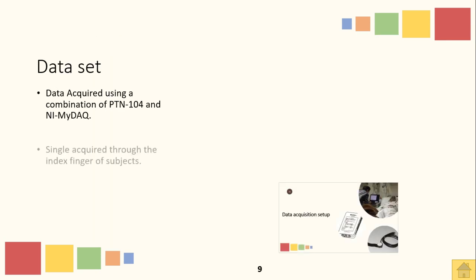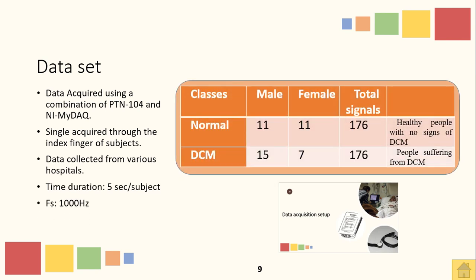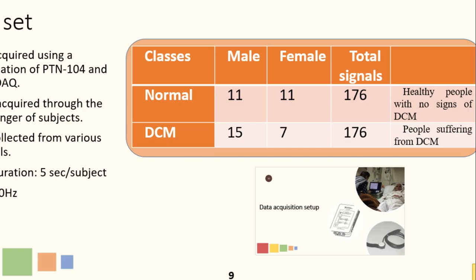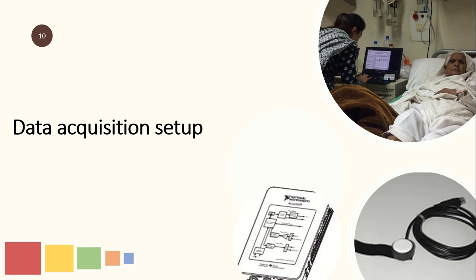The dataset was acquired using a combination of the PTN104 sensor and NI-myDAQ. The signals were acquired through the index fingers of the right hand of the subjects, and the data was collected from various hospitals in the areas of Islamabad, Rawalpindi, and Wagan. The time stamp for the signals was 5 seconds per subject and the sampling frequency was set to 1000 Hz. These images show the data acquisition setup — this is the PTN104 sensor and this is the NI-myDAQ.